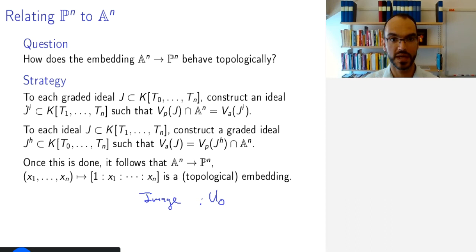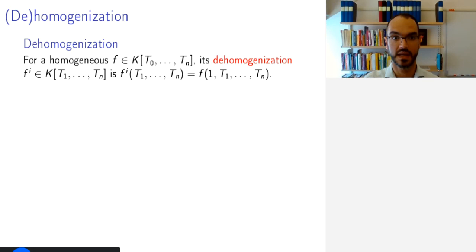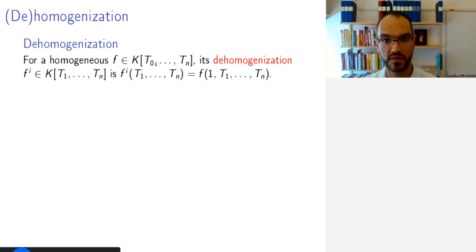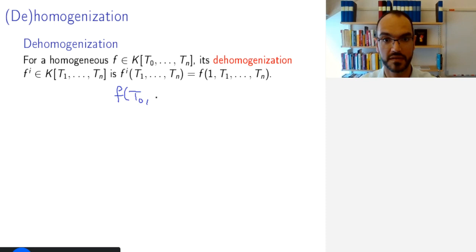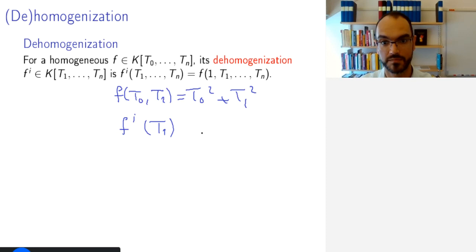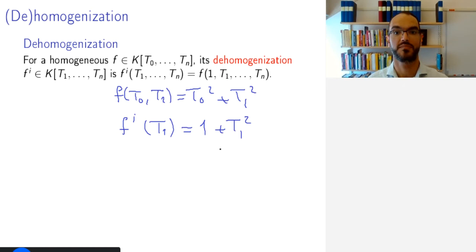From an ideal J we get J^i by a process called de-homogenization, and from J we get J^H by homogenization. Starting with de-homogenization at the polynomial level: if we have a homogeneous polynomial F in N+1 variables T0 to Tn, its de-homogenization F^i in variables T1 to Tn is defined by evaluating F at T0 = 1. For example, if F(T0, T1) = T0² + T1², then F^i(T1) = 1 + T1². The superscript i is short for inhomogeneous — we obtain the polynomial where T0 is declared to be 1.